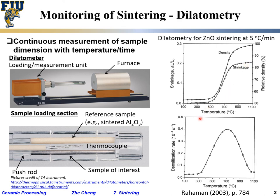From these dilatometry curves, we can get the densification rate, with units of 1/second per temperature. The fastest densification rate occurs in a specific temperature range — at too low a temperature the densification rate is too low, and at too high a temperature sintering is essentially complete so the densification rate is again lower.